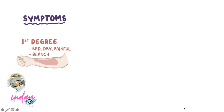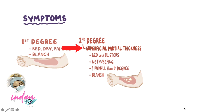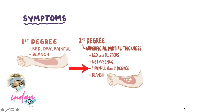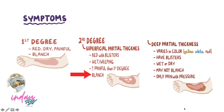Symptoms of a burn depend on its degree. In first degree burns, the affected area becomes red, dry, and painful, and tends to blanch as blood flow is restricted with compression. In second degree superficial partial thickness burns, the area can be red with clear blisters, wet, and even more painful than first degree burns, but still with blanching.